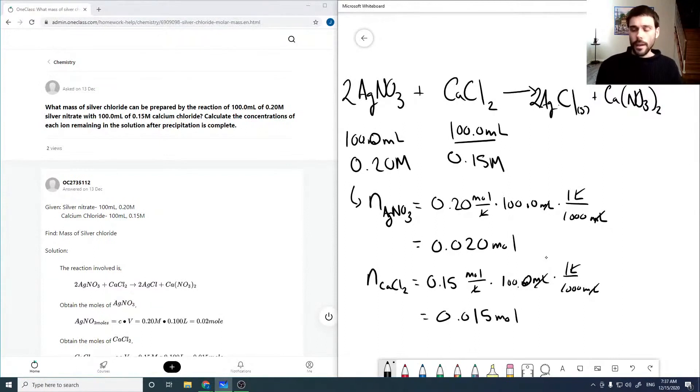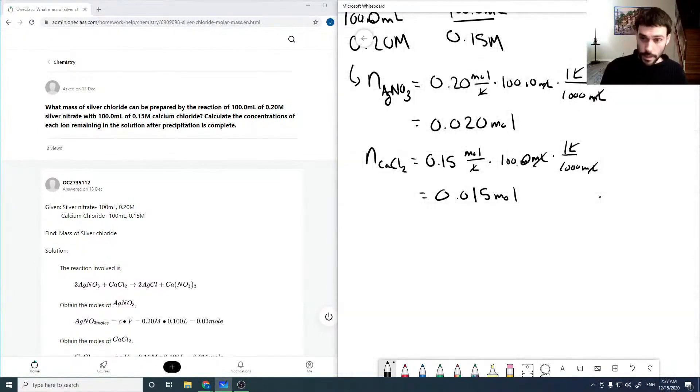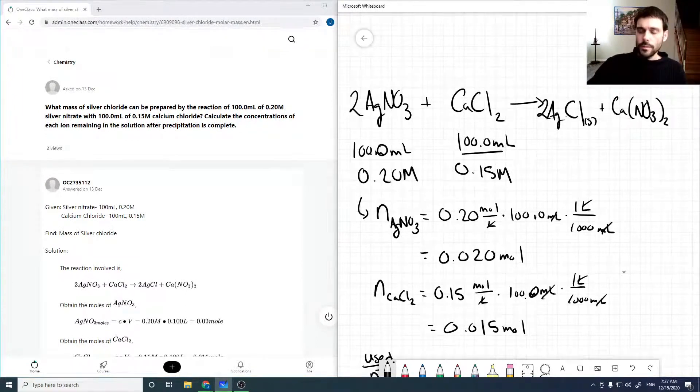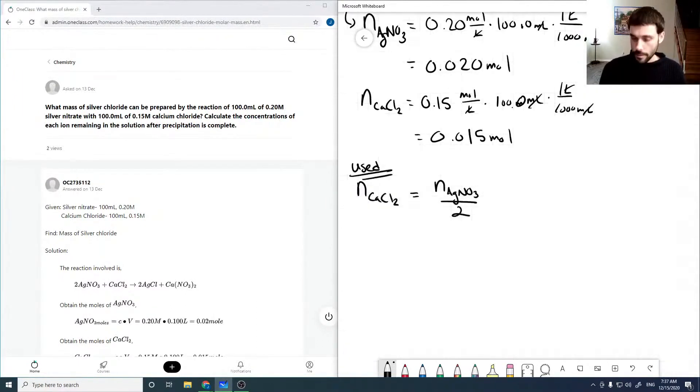So we've got an excess here because we only need, for every two moles of silver nitrate, we need one of calcium chloride. So that means N calcium chloride used is just the amount of moles of silver nitrate over two, as we need two moles of silver nitrate per calcium chloride. So that would be 0.020 over two, which is 0.010 moles. So we only need 0.010 moles of calcium chloride, but we've got 0.015, so the rest of it will be excess.